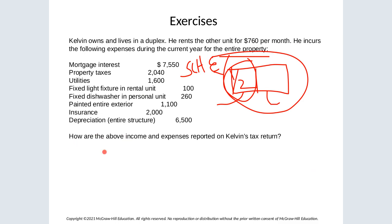The rental income is $760 per month times 12, which equals $9,120. This amount is allocated entirely to the rental property on Schedule E.